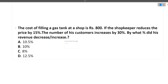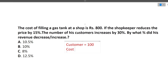The next question: the cost of filling a gas tank is Rs. 800. If the shopkeeper reduces the price by 15%, his customers increase by 30%. By what percentage did his revenue decrease or increase? Let's suppose current customers were 100 and the cost is Rs. 800, so current earning is Rs. 800 times 100 equals Rs. 80,000.